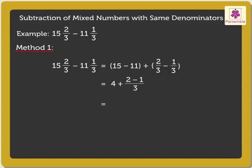This equals 4 plus 1 upon 3. Lastly, add the resulting whole number 4 to the fraction 1 upon 3, and we get the mixed number as 4 and 1 upon 3.